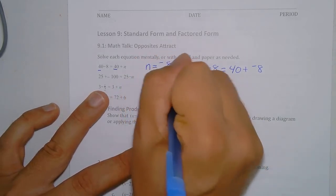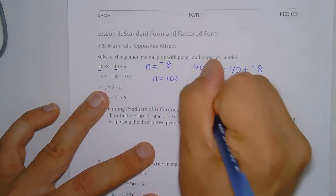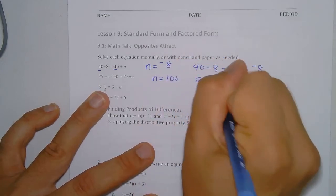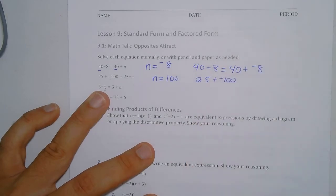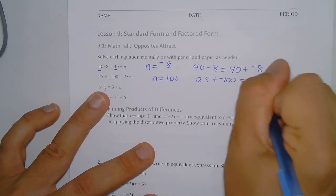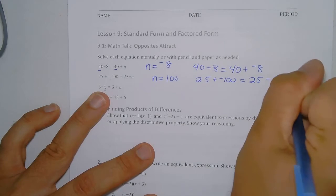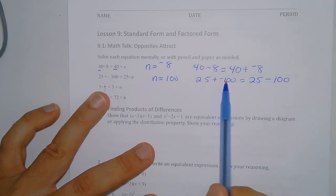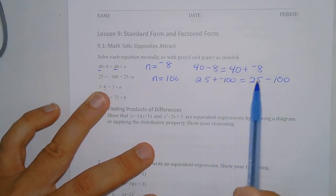So we know here that n would have to equal 100, and that is because 25 + (-100) is the same as saying 25 - 100. So again, you have two symbols there: plus negative 100 is the same as 25 - 100.